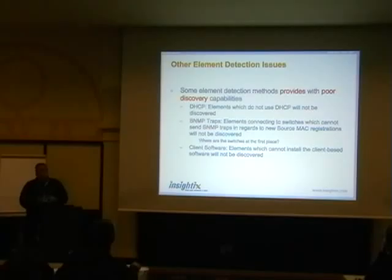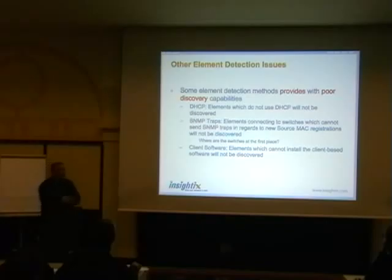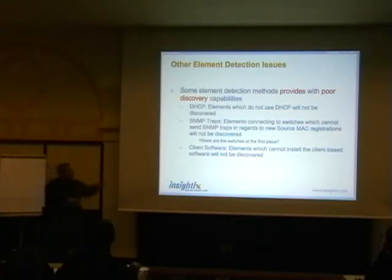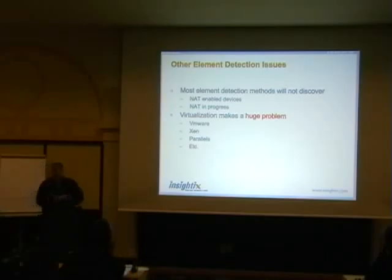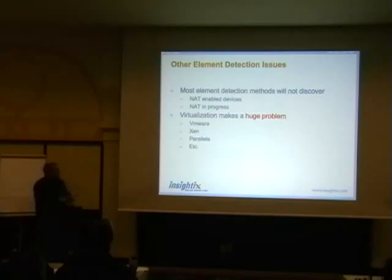How fast did the SQL worm spread? How many packets did it have to send? Only one packet. So 30 seconds to 120 seconds is a no-go — we need to block access as soon as the device enters the network rather than wait and allow it a window of opportunity. Client-based software cannot be installed on certain operating systems, so you're vulnerable. Other issues include NAT-enabled devices and virtualization — if I have a device with VMware, Xen, or Parallels running in NAT mode rather than bridge mode, usually nobody will detect the presence of that guest operating system.